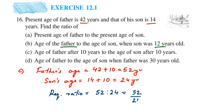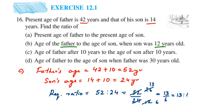Converting to a fraction: 52 upon 24. Cancel in 2 table — 2 twenty-sixes and 2 twelves — then cancel again: 2 sixes are 12 and 2 thirteens are 26. So we get 13 upon 6. The ratio will become 13 is to 6. This is the answer for the third question.